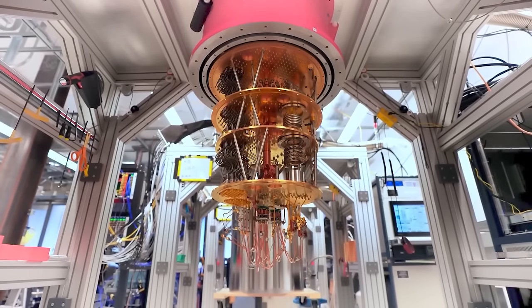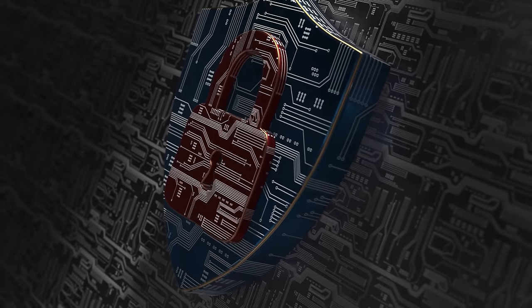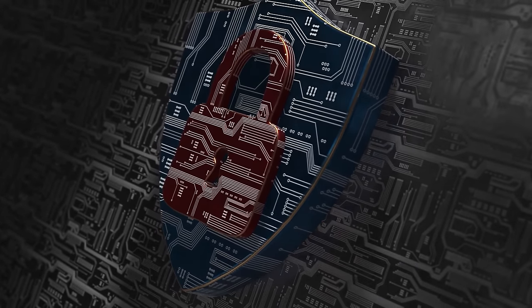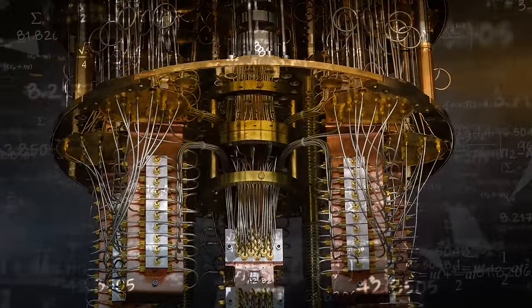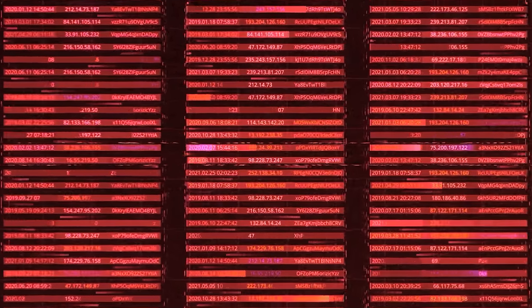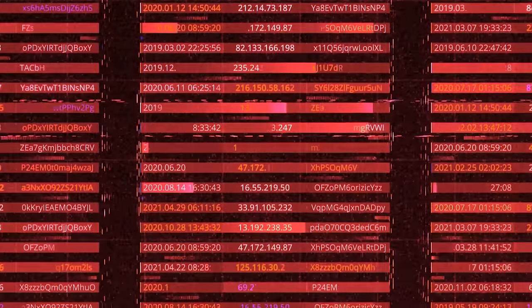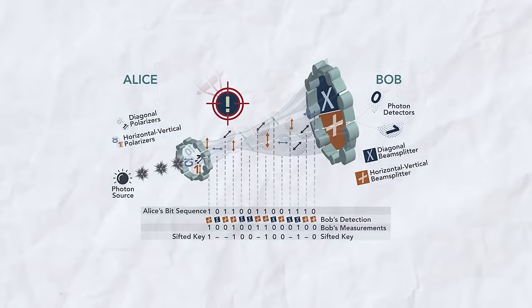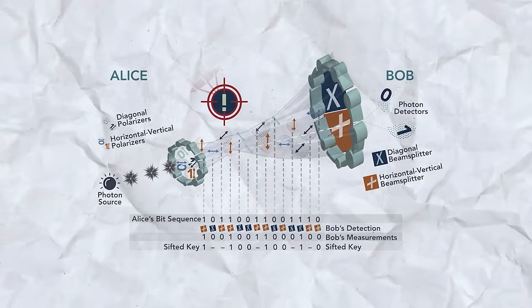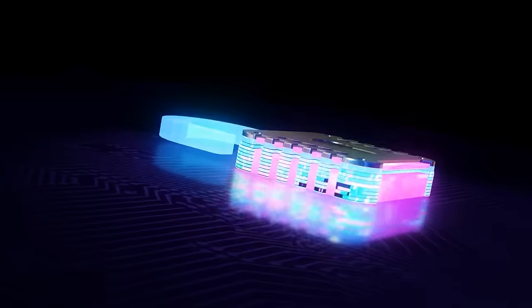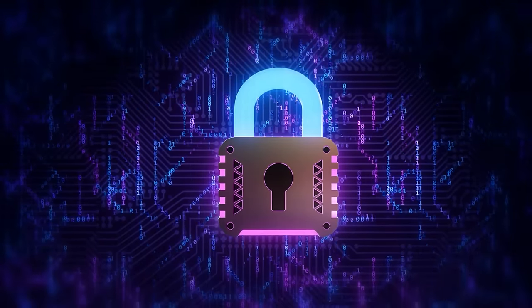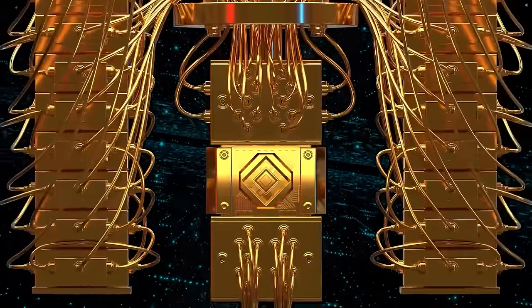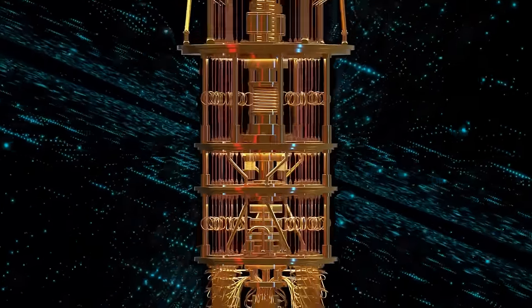But it's not all doom and gloom. There are other encryption methods like ECC that use different math problems. The trouble is quantum computers could crack those too with some tweaking. So what does this mean for our online world? It means we need to prepare for a future where the old ways of encryption might not be enough. Scientists are working on new methods, called quantum-resistant cryptography, to keep our data safe in the age of superpowered computers. The switch won't be easy. It's like upgrading all the locks in your house at once. But it's important. We need to be ready before quantum computers become powerful enough to crack the codes that keep our information hidden.